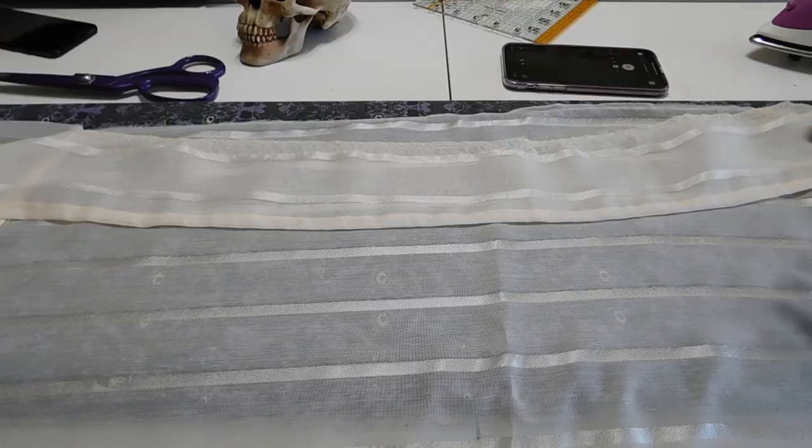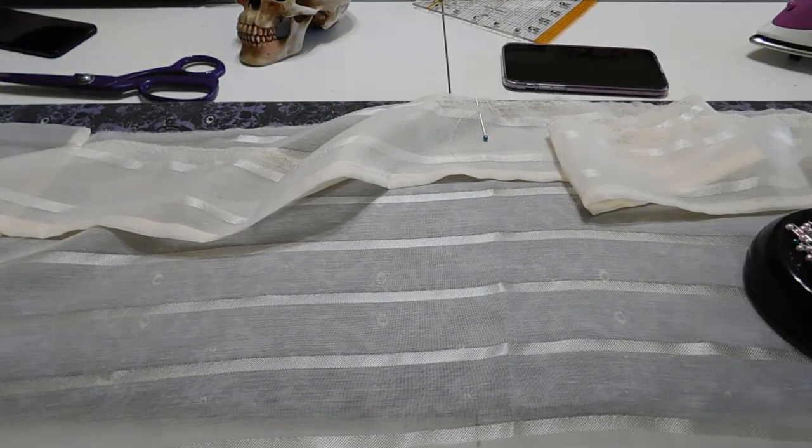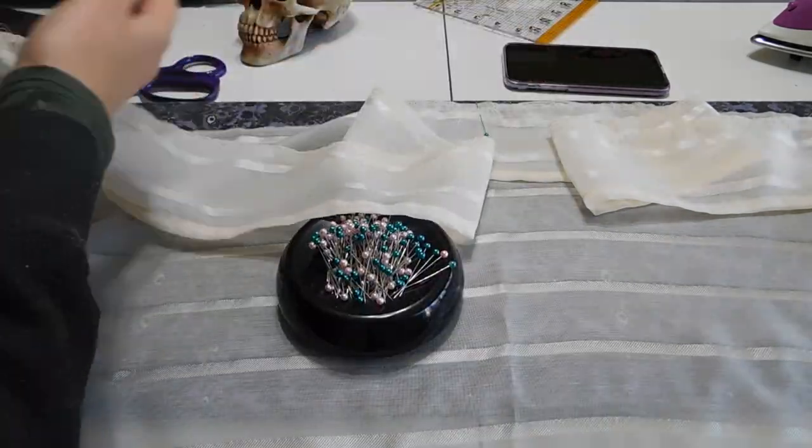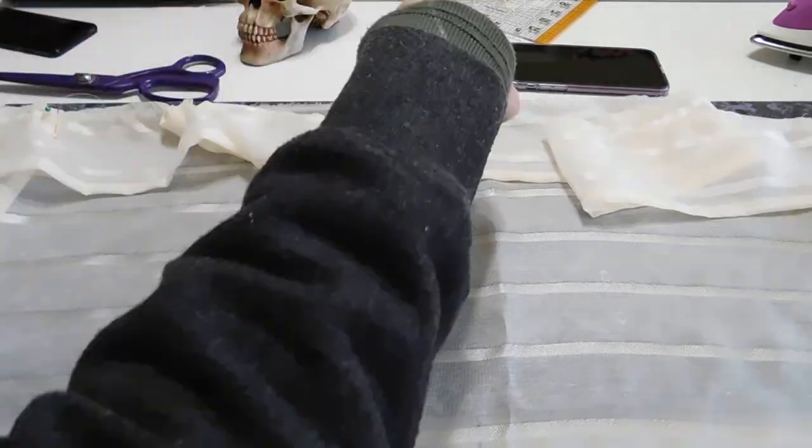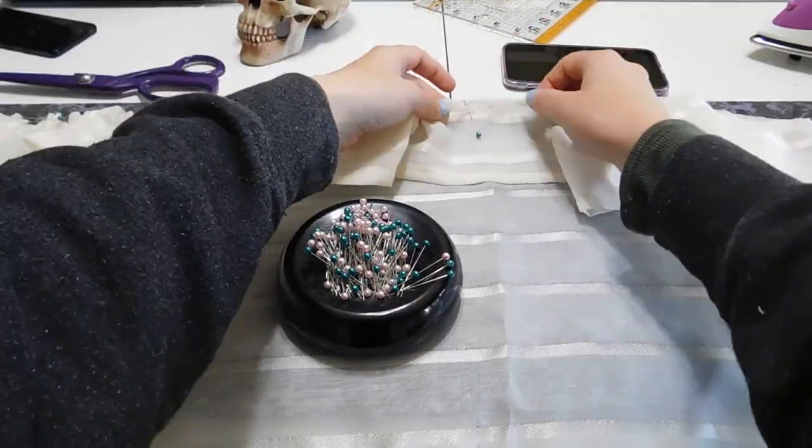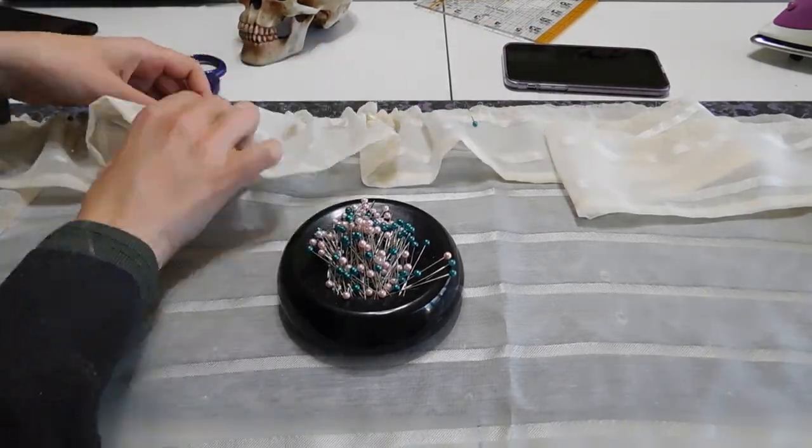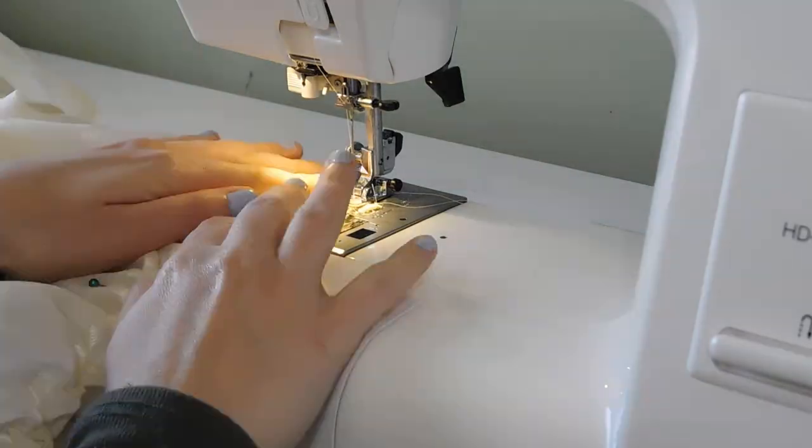Once all the gather stitches are in place I start pinning my pieces to the top of the base garment matching my quarter markings to the center and sides of the dress. Then I pull the thread tails together down my ruffle and evenly disperse the gather placements. Once the ruffle is gathered and pinned I will stitch it down with a 2.5mm stitch length.